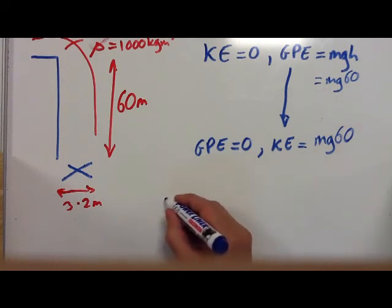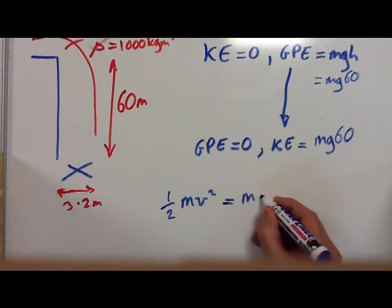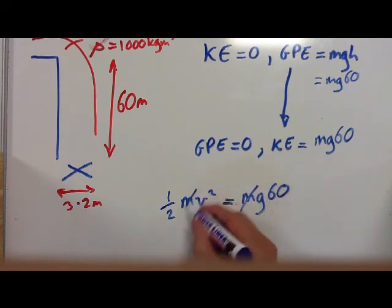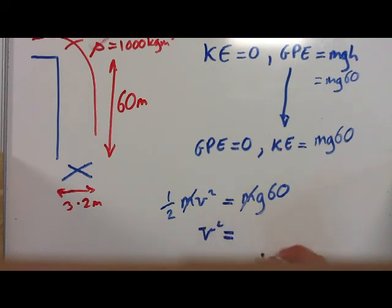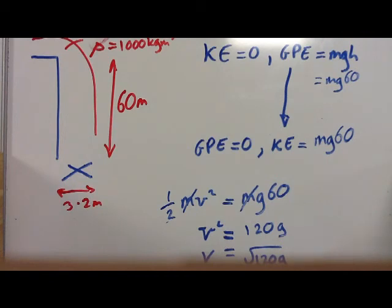We know the formula for kinetic energy is one-half M V squared, which equals M G times 60. The M's cancel out, which is nice. So V squared equals 2 times G times 60, which is 120G. That means V equals the square root of 120G, which equals 34.6 metres per second — the maximum speed of the water as it hits the turbine.